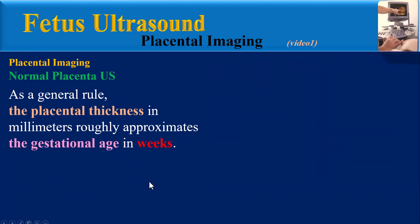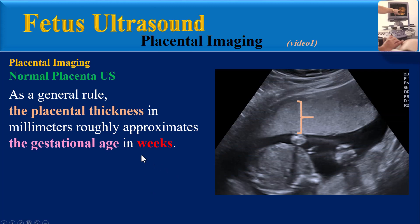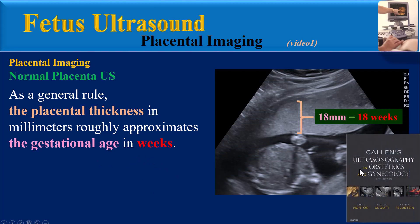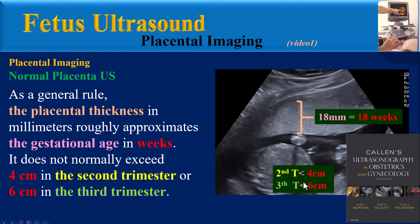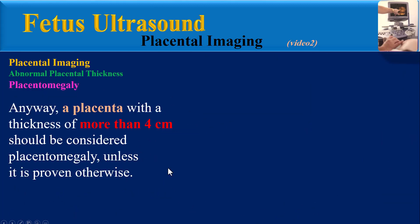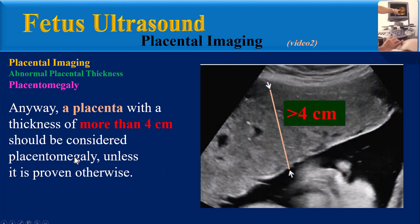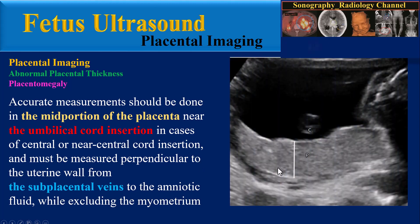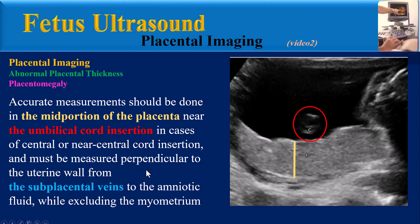Regarding abnormal placental thickness, as a general rule the placental thickness in millimeters roughly approximates the gestational age in weeks. One reference suggests it does not normally exceed 4 cm in the second trimester or 6 cm in the third trimester, though many articles suggest it should not exceed 4 cm. A placenta with a thickness of more than 4 cm should be considered placentomegaly unless proven otherwise. Accurate measurements should be done at the mid-portion of the placenta near the umbilical cord insertion and measured perpendicular to the uterine wall from the subplacental veins to the amniotic fluid, excluding the myometrium.